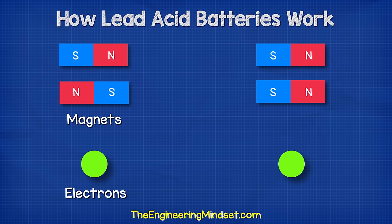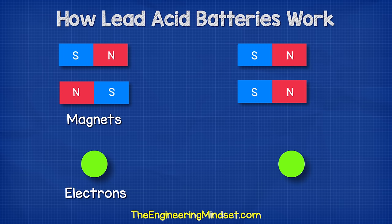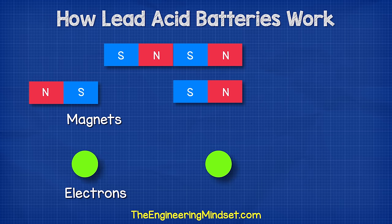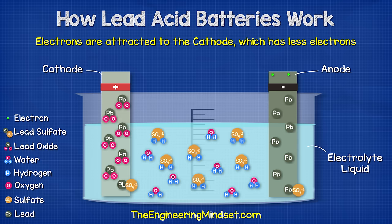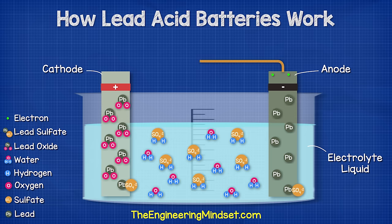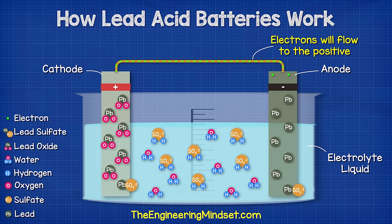The electrons are negatively charged and so they repel each other — they are attracted to the positive terminal which has fewer electrons. However they can't reach it yet, so if we provide a path for the electrons such as a wire, then the electrons will flow through this to get to the positive terminal.